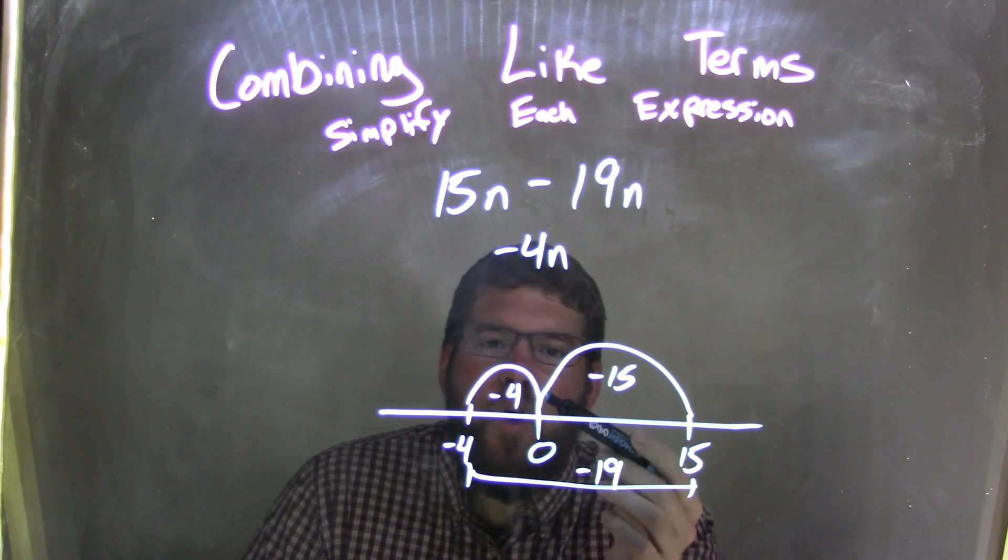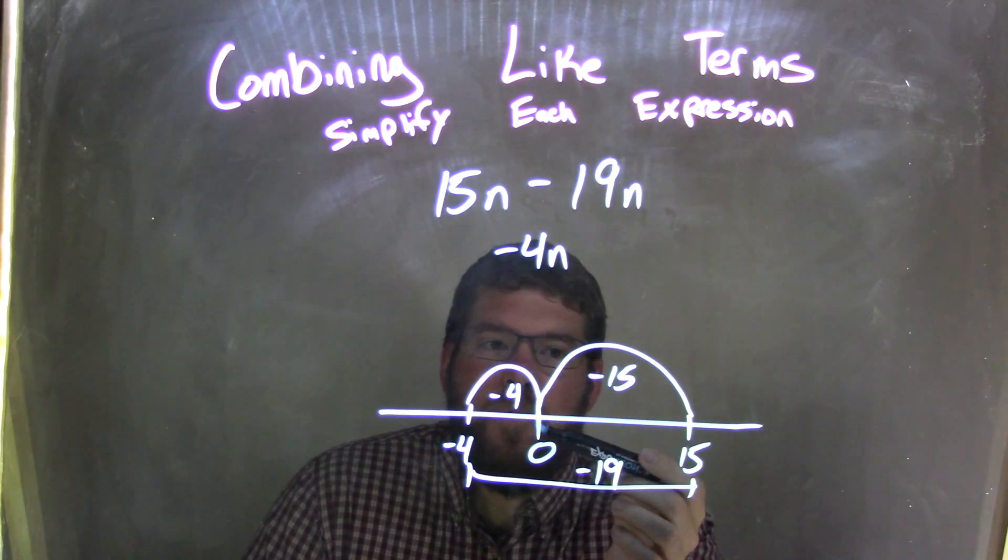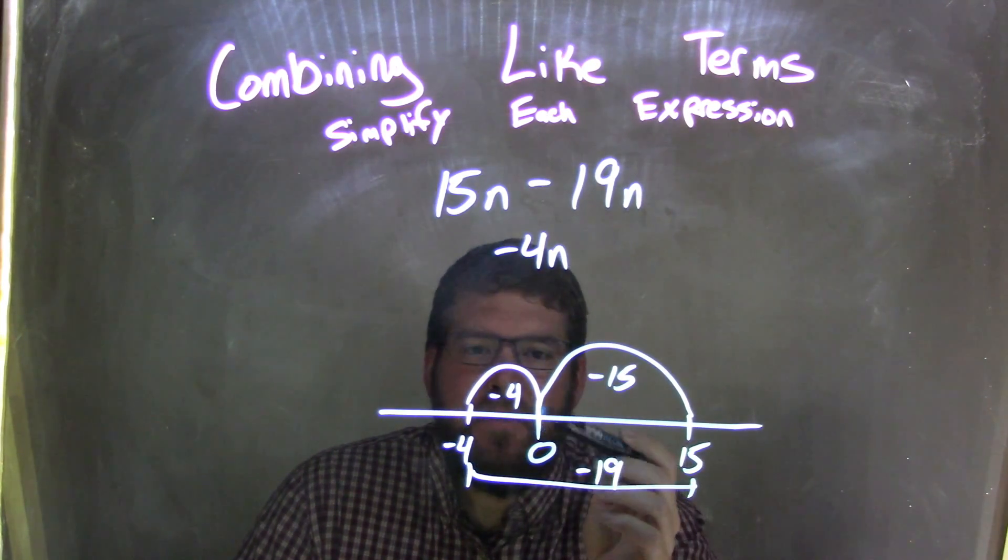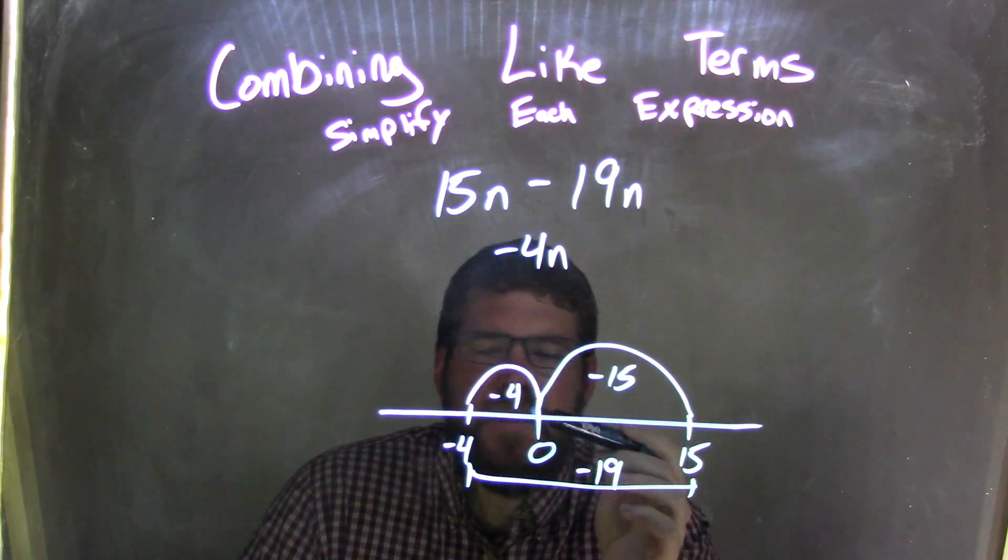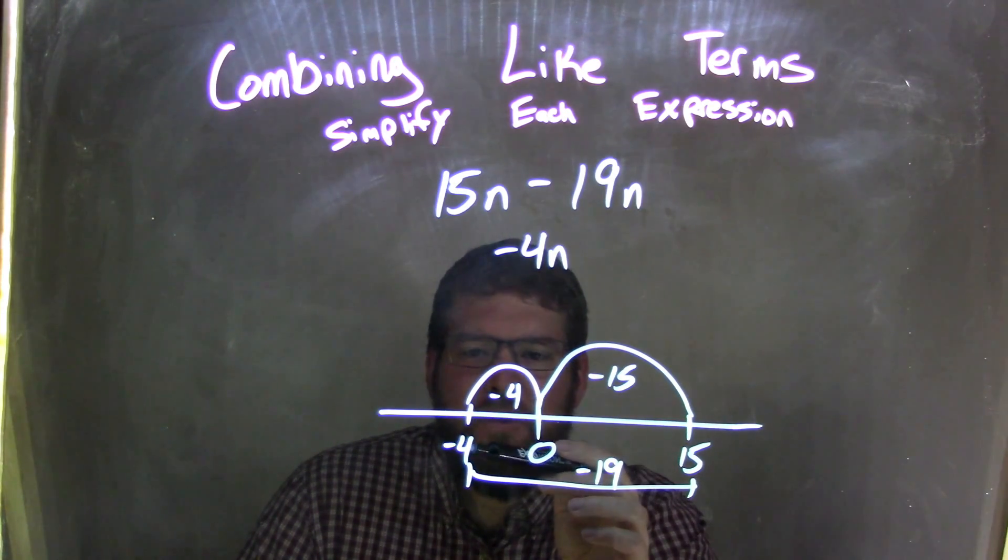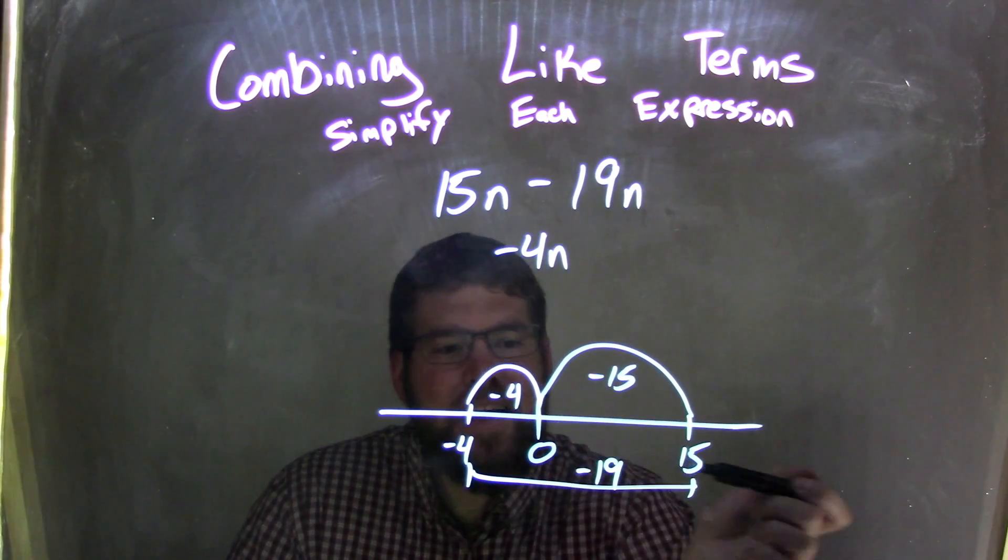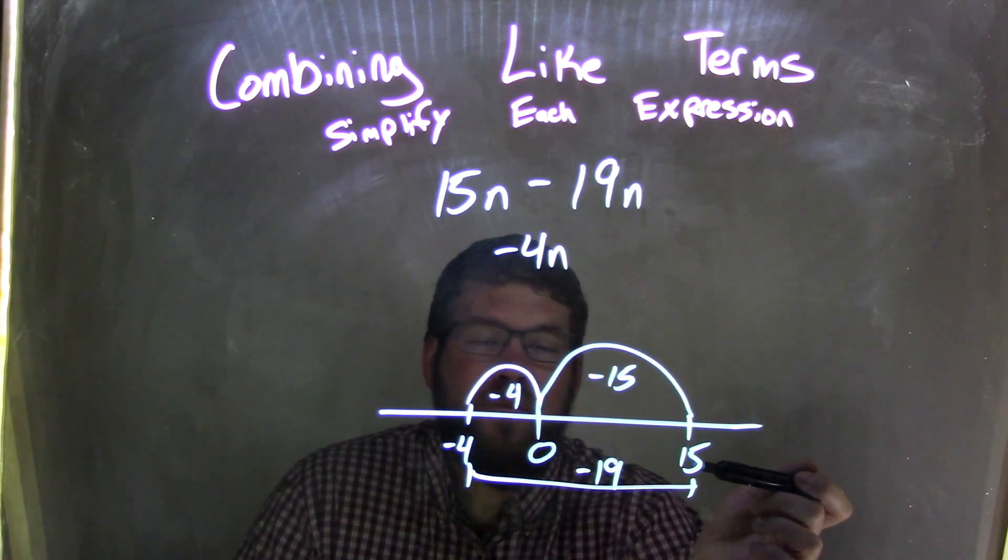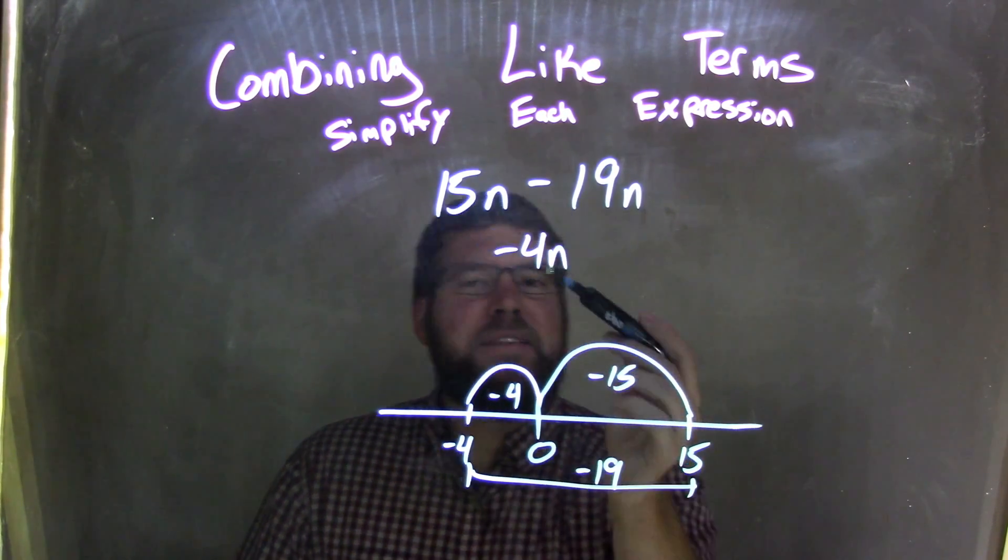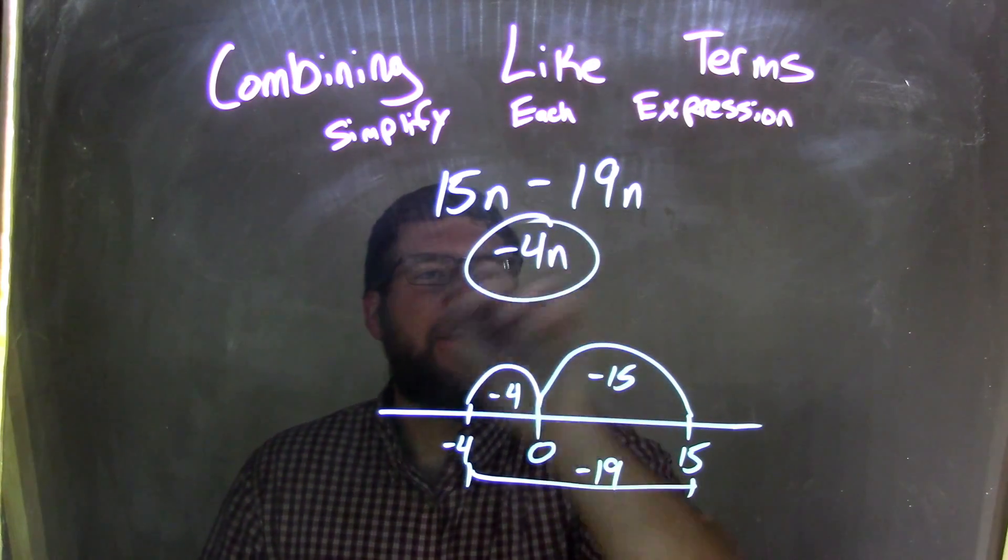Now we have 4 more units, right? So we subtract 4 more to get the total of minus 19. I know that 4 plus 15 is 19, so I'm going to have negative 4 here. And so negative 4n is my final answer, because that's subtracted 19 units from 15. So again, our final answer is negative 4n. Thank you.